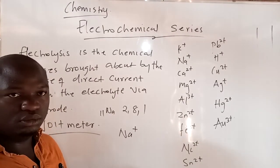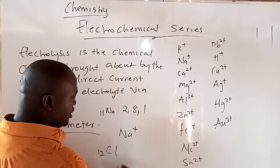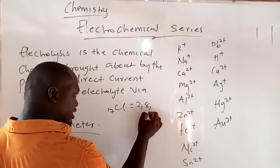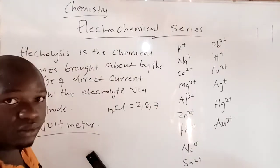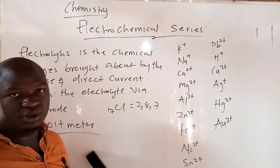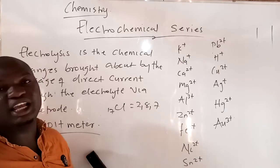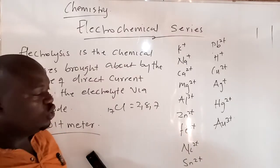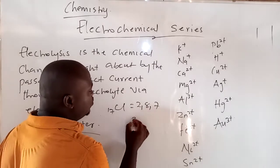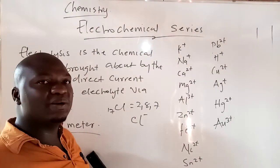Now we have the case of chlorine. The atomic number of chlorine is 17, so you have the configuration 2, 8, 7. Chlorine needs one more electron to be stable. It cannot lose seven electrons — it is not easier to give seven than to gain one. So chlorine will gain one electron, making the outer shell eight. That is why we write chlorine as Cl⁻, because it gains one electron.